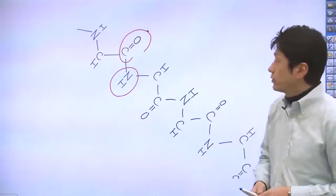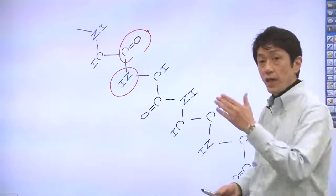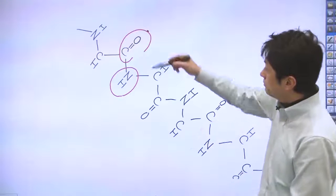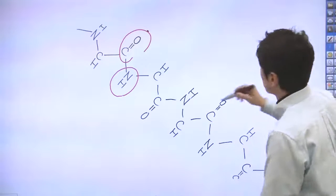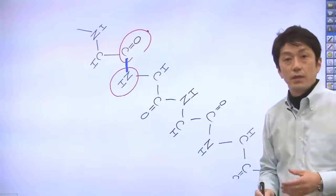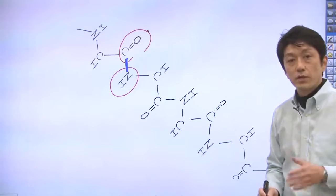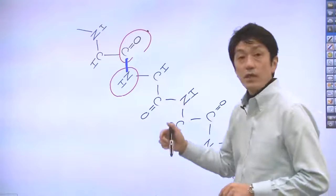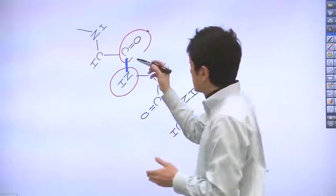As I mentioned before, CN bond, CN bond right here, has a partial double bond character. So these bonds are all in the same plane.